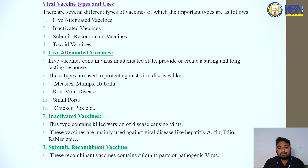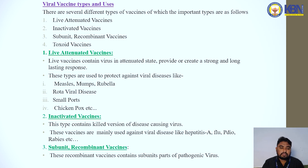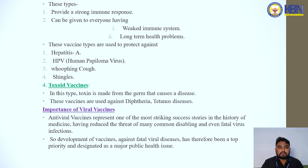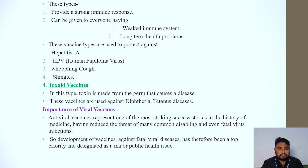Inactivated vaccines contain a killed version of the disease-causing virus. These vaccines are mainly used against viral diseases like hepatitis A, flu, polio, and rabies. Subunit or recombinant vaccines contain specific parts of the pathogen virus. These types provide a strong immune response and can be given to everyone, including those with weak immune systems or long-term health problems. They are used to protect against hepatitis B, whooping cough, and shingles.